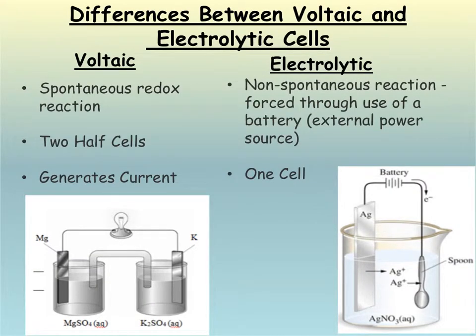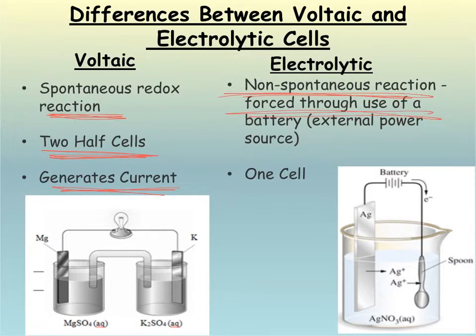All right, differences between voltaic or galvanic cells and electrolytic cells. So voltaic, it's a spontaneous reaction. We have two separate half cells. And we're going to generate a current through our wire that we can use to power something. Electrolytic, these are non-spontaneous. We must force them to happen through an external power source. And guess what? They only have one cell.